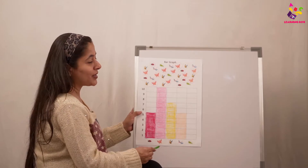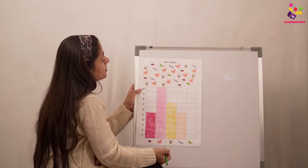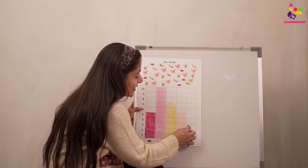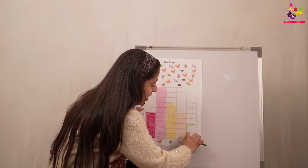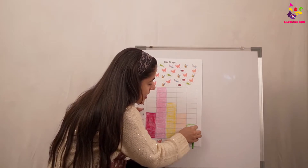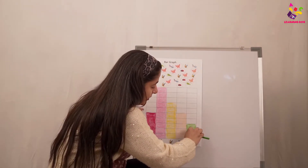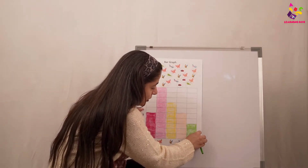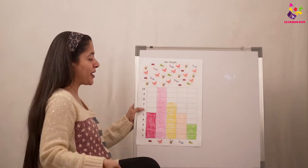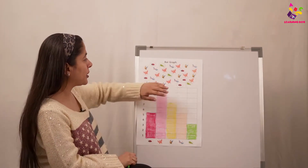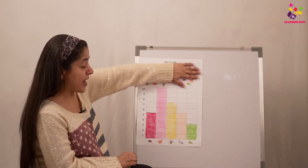Which is the last creepy crawly? Yes, that's the grasshopper. Let's count how many grasshoppers — one, two, three. How many boxes will I color? Three boxes. There are three grasshoppers so we will color three boxes. The boxes for the grasshopper are ready.